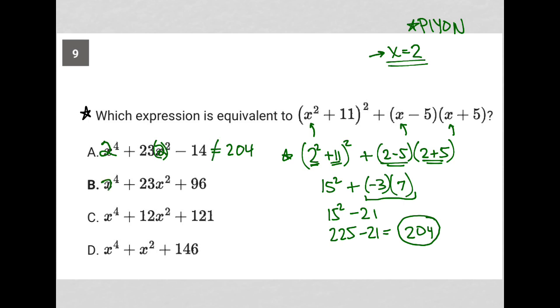But here, 2 to the 4th is 16. Here, 2 squared is 4 times 23 is 92. And we add 96. Here, you will see that it does, in fact, equal 204. And that's why, through this other method, B...